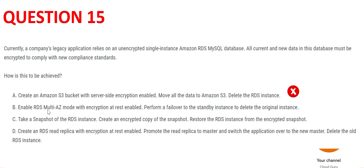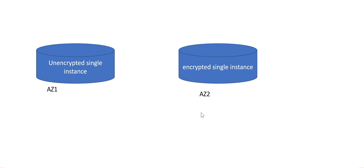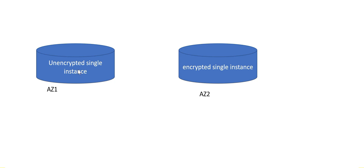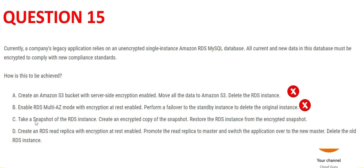Option B says enable RDS Multi-AZ with encryption enabled and perform a failover to the standby instance. This is wrong. You have AZ1 unencrypted and AZ2 encrypted as a standby. The option suggests doing a failover to the standby to delete the original instance, but failover only happens when the primary fails — you cannot manually trigger a failover in this way to switch to an encrypted instance. So B is wrong.